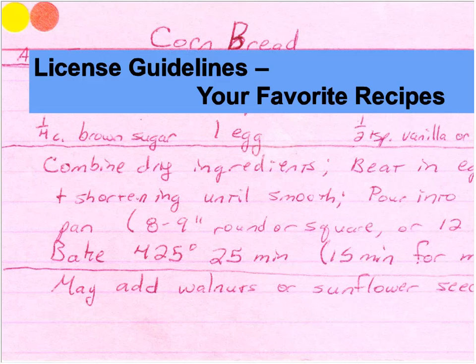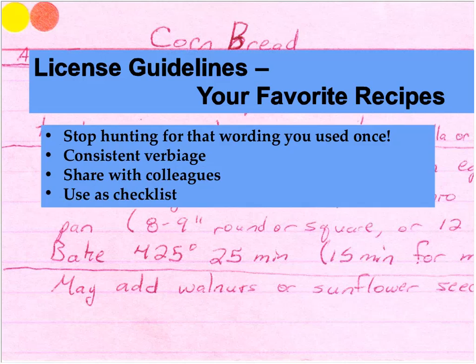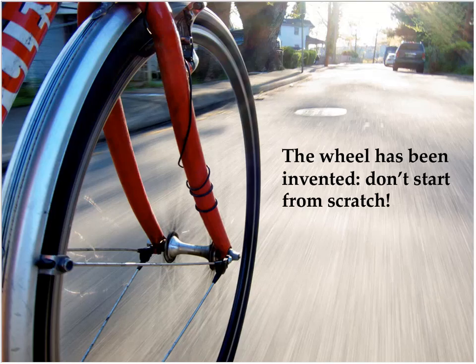So why create license guidelines and what are they? I like to think of them as my favorite recipes. It took me years to figure out how to make lasagna I really found edible, and once I figured it out, I wrote it down so I could always go back and do it the exact same way. License guidelines are just like that — they allow you to stop hunting for that wording you used once in one license. They allow you to have consistent verbiage across all of your license agreements, share licensing standards with colleagues and administrators, and use guidelines as a checklist when reviewing new licenses. The wheel has been invented, and I'm going to lead you through what I think is a really easy process to develop a license template at your institution.